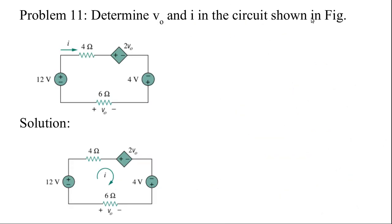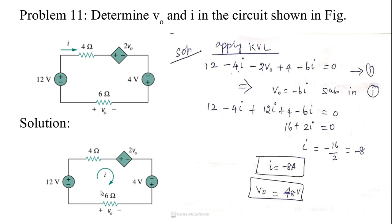Next problem: determine V0 and i in the circuit shown in the figure. We take the current flowing in the clockwise direction. This is potential drop to rise, so I take plus 12, then minus 4i. This next element is a source — potential rise to drop — so I take minus 2V0. Here it is drop to rise, so positive; this one is rise to drop, so negative.